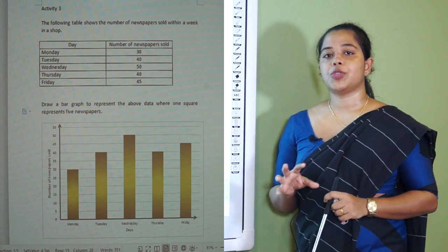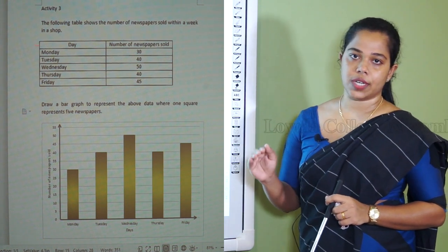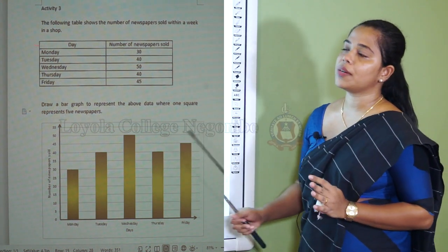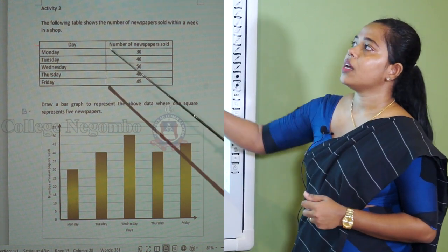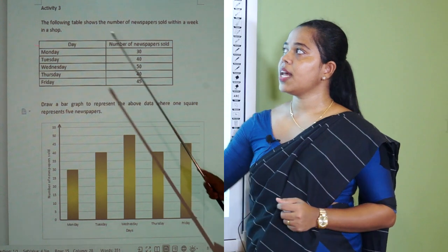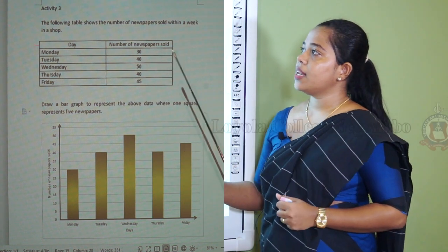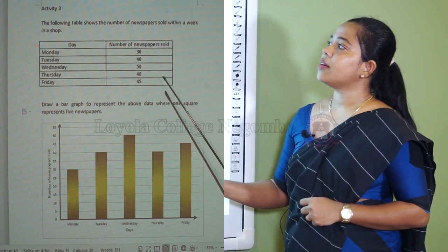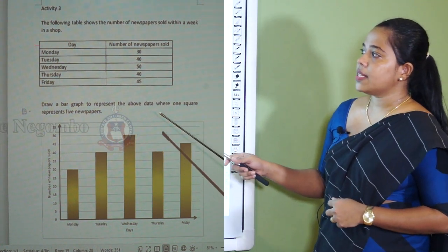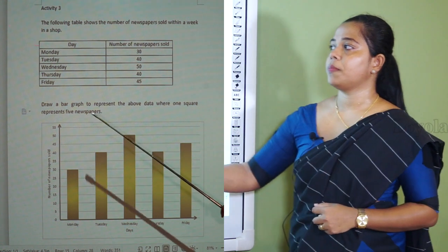In activity 1, I taught you how to draw a graph using the given data. In activity 2, we discussed how to take different scales. In activity 3, it is similar, but there is another new question. The following table shows the number of newspapers sold within a week in a shop. Five days are given: 30 newspapers were sold on Monday, 40 on Tuesday, 50 on Wednesday, 40 on Thursday, and 45 on Friday. Draw a bar graph to represent the above data, where one square represents five newspapers.